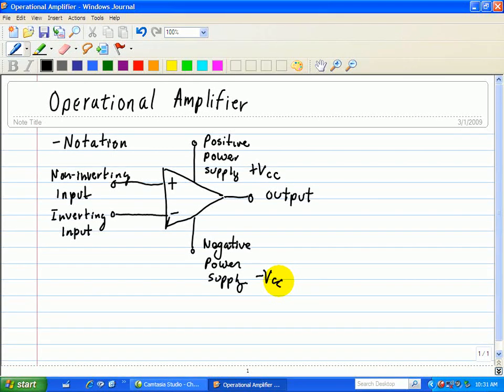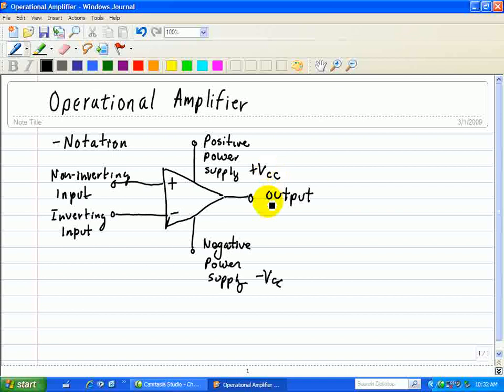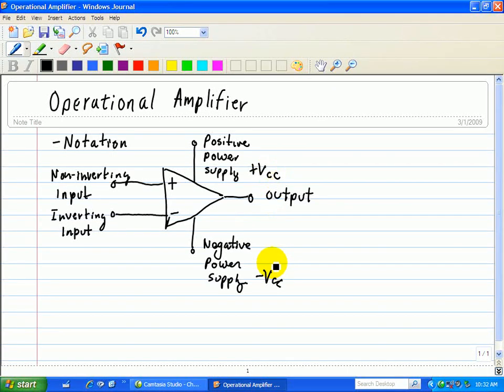While some op-amps have more than five terminals, these five are usually present and are the only ones we will use in this series of tutorial videos. The two power terminals are not usually shown in circuit diagrams. However, be assured that they are always there because external power supplies are required for the op-amp to operate as an active device. The power required for signal amplification comes from these terminals from an external power source. The plus VCC and minus VCC voltages applied to these terminals also determine the upper and lower limits on the op-amp voltage output.